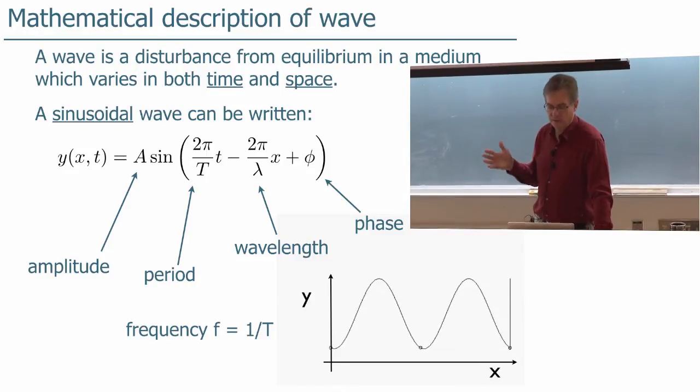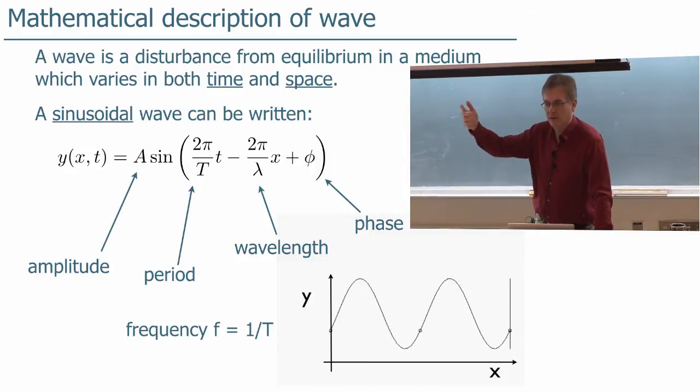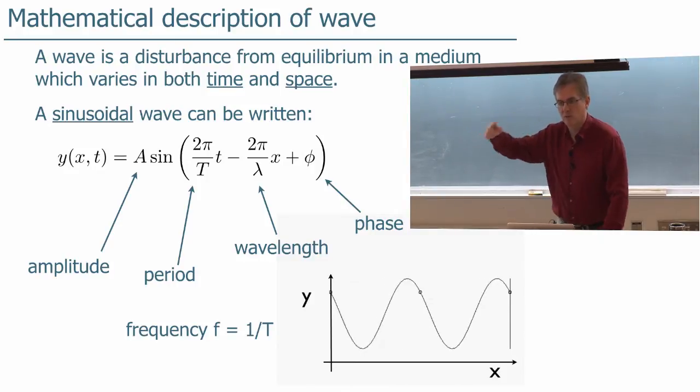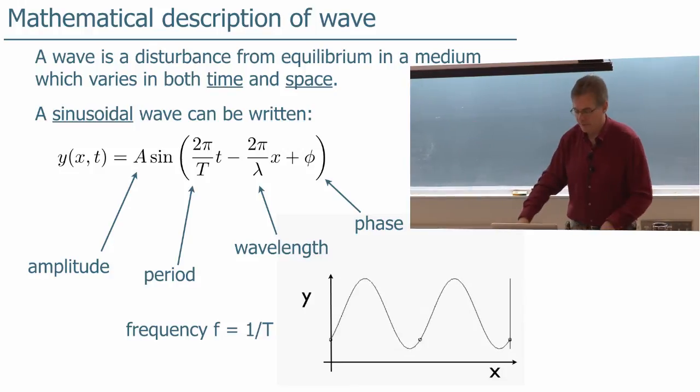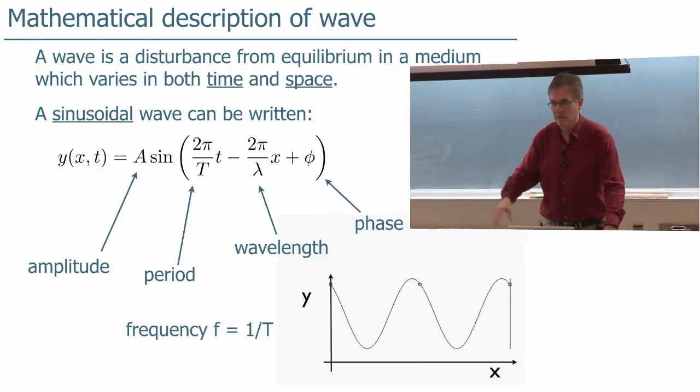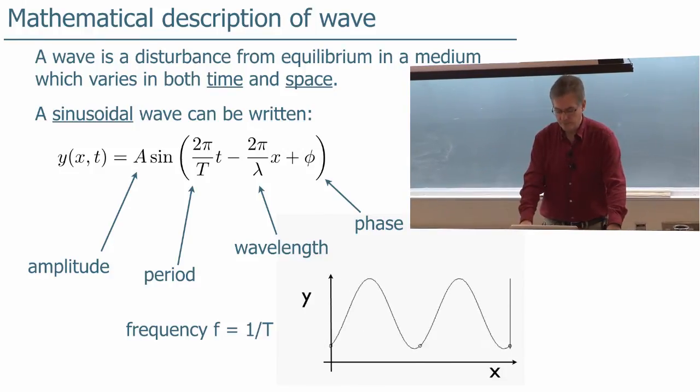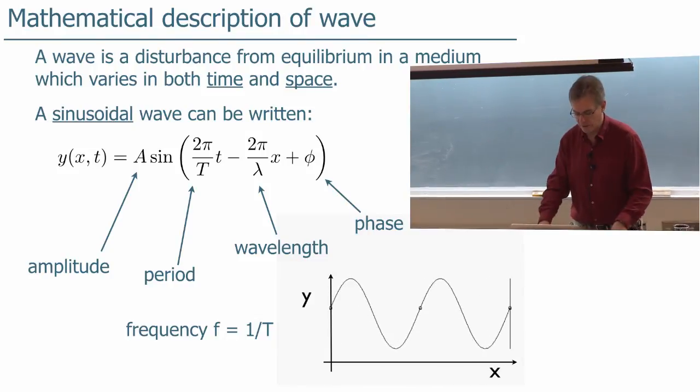Lambda is the wavelength. And again, x over lambda goes from zero to one as you go through one full wave cycle, plus the phase phi, which just allows you to adjust for initial conditions.